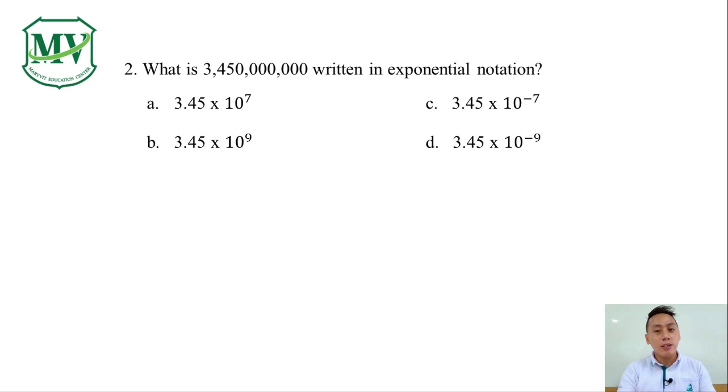Take note, if the number is greater than 10, the exponent will be positive. Choice C and choice D are not possible because they have negative powers. We are now left with only A and B. We can figure out the answer by doing the solution.